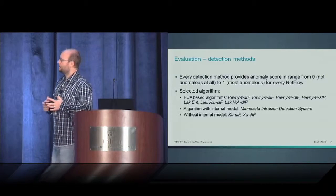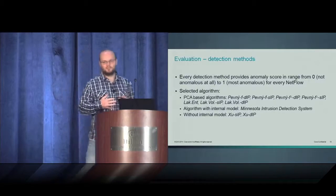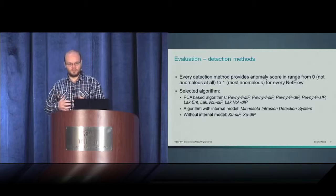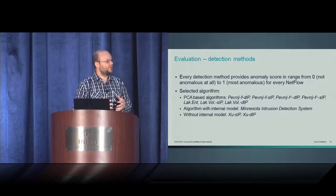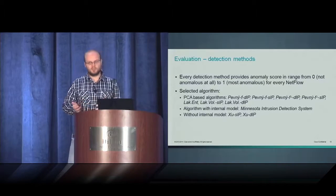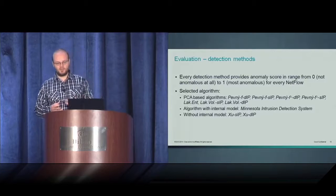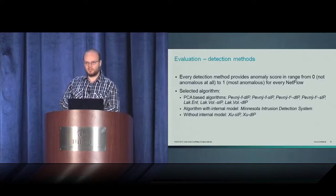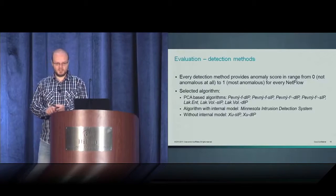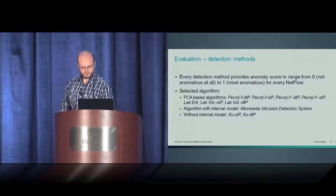The detection methods provide anomaly score in the range from zero to one for every NetFlow, where zero means not anomalous at all and one means completely anomalous. The selected algorithms that we have selected can be divided into three major groups. The first group are the PCA-based algorithms. The second group is the algorithm that has internal model but it's not PCA-based. And the last group are the algorithms without any internal model.